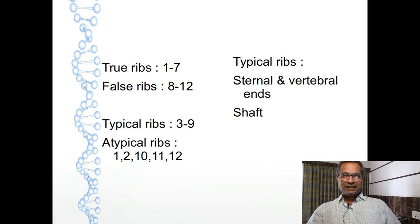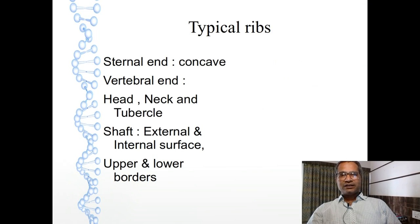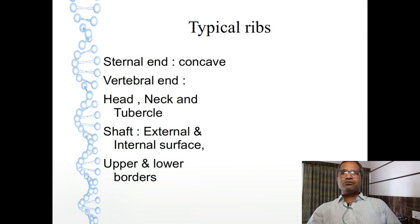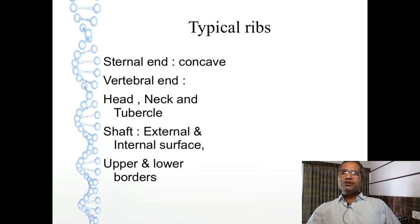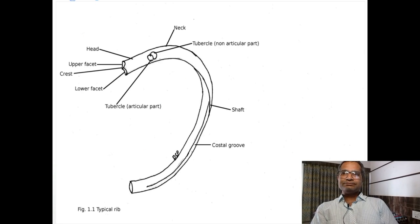A typical rib shows two ends: the sternal end and the vertebral end. The sternal end is the anterior end, which shows articulation with the sternum with the help of its costal cartilage. The vertebral end is the posterior end, which articulates with the body of the thoracic vertebra and its transverse process. In between these two ends there is the shaft. The sternal end shows a concave facet that articulates with its costal cartilage, which then articulates with the sternum.